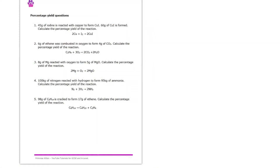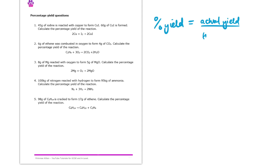So next up, we're going to have a look at these questions on percentage yield. Before we do that, let's just recap the topic and remind ourselves of the equation we'll need to use. The formula states that percentage yield is equal to the actual yield over the theoretical yield, and then we times it by 100 to turn it into a percentage.